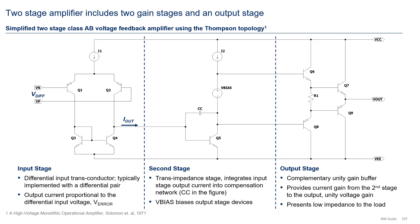One quick remark: this is not the blameless topology — there is no such thing. A blameless amplifier, as described by Doug Self, is an amplifier designed so that all the easily defeated distortion mechanisms have been rendered negligible. This is irrespective of topology. It just so happens that Doug implements all his blameless amplifiers using the Thomson topology.